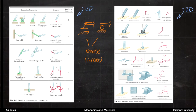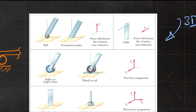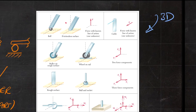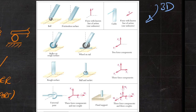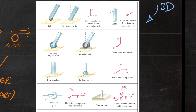That covers supports in 2D. You can also have them in 3D — it's essentially the same concept. A roller in 3D is shown like this. You can also have cables again, or wheels on rails that move in a certain direction, giving you two force components. For instance, a wheel on a rail resists motion in two directions but not in the direction along the rail.